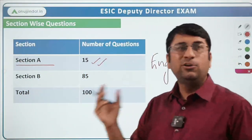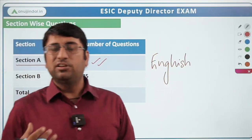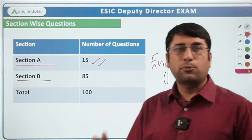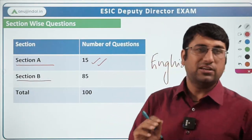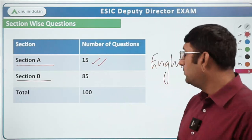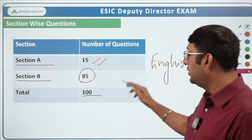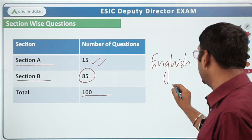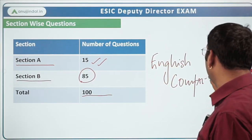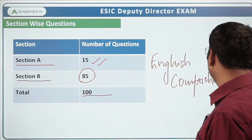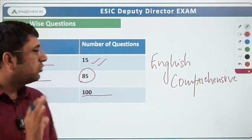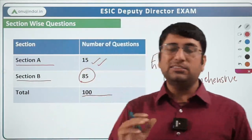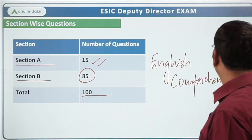Section A can be understood in a day. If you have been reading newspapers and are good at understanding and speaking English, majority of the work is already done. Section B is a comprehensive section which has approximately 10 topics mentioned that you need to prepare very well — that is going to be a game changer for you. Section B has 85 questions, making a total of 100 questions overall.